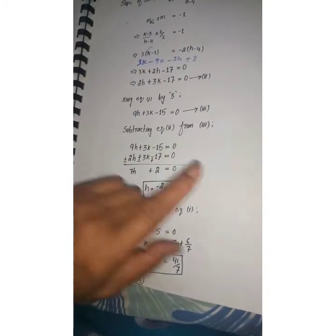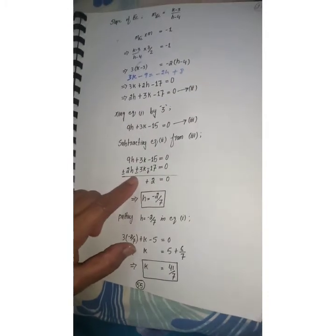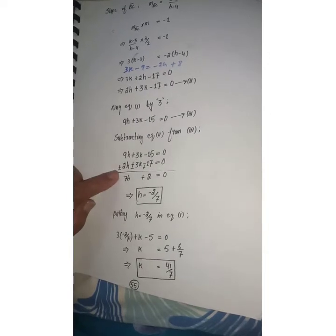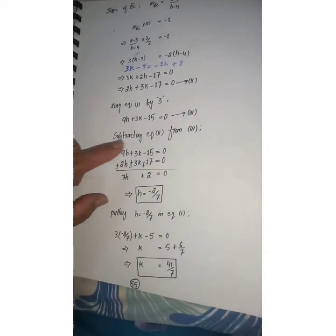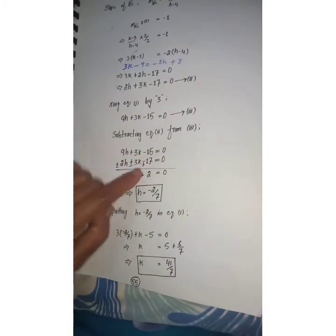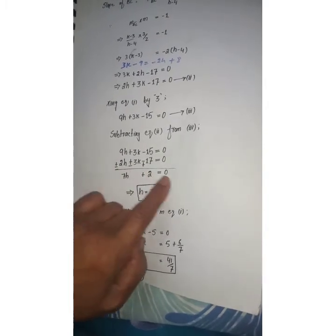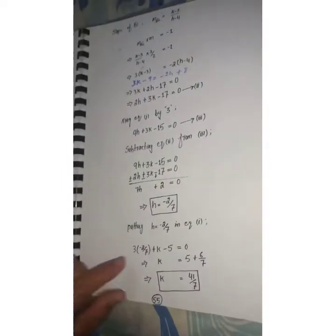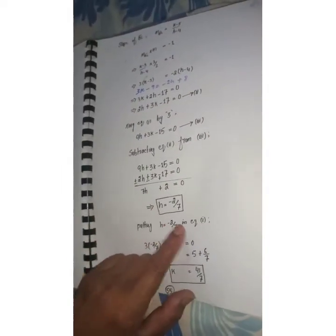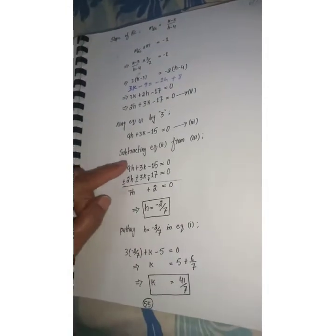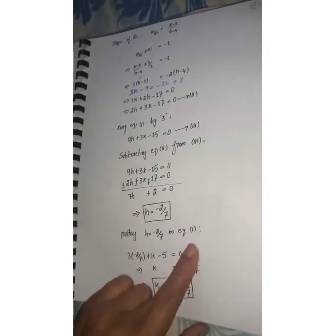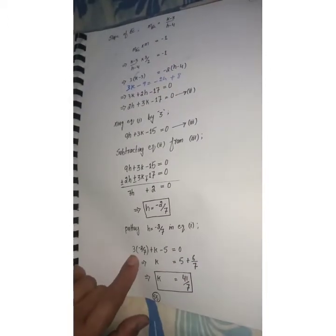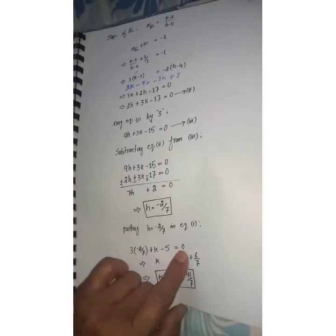We subtract equation 2 from equation 1 (after multiplying to eliminate k). Solving the simultaneous equations: multiplying equation 1 by 3 gives 9h + 3k - 15 = 0. Subtracting equation 2: (9h - 2h) + (3k - 3k) + (-15 + 17) = 0, so 7h + 2 = 0. Therefore h = -2/7. Substituting back into equation 1: 3(-2/7) + k - 5 = 0.